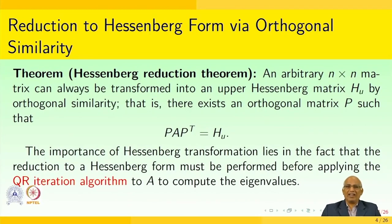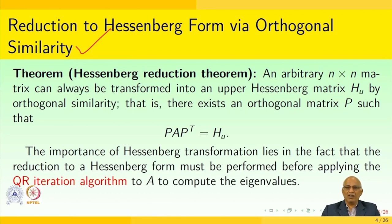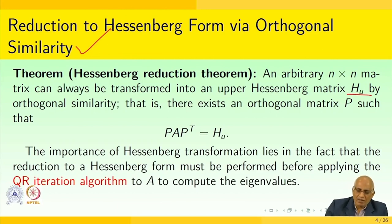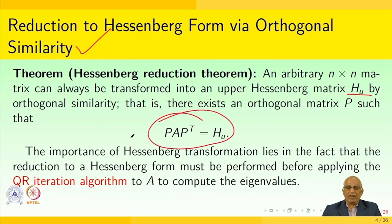So, how do we perform reduction to Hessenberg form via orthogonal similarity? An arbitrary N×N matrix can always be transformed into an upper Hessenberg matrix H_U by orthogonal similarity. That is, there exists an orthogonal matrix P such that P·A·Pᵀ = H_U.